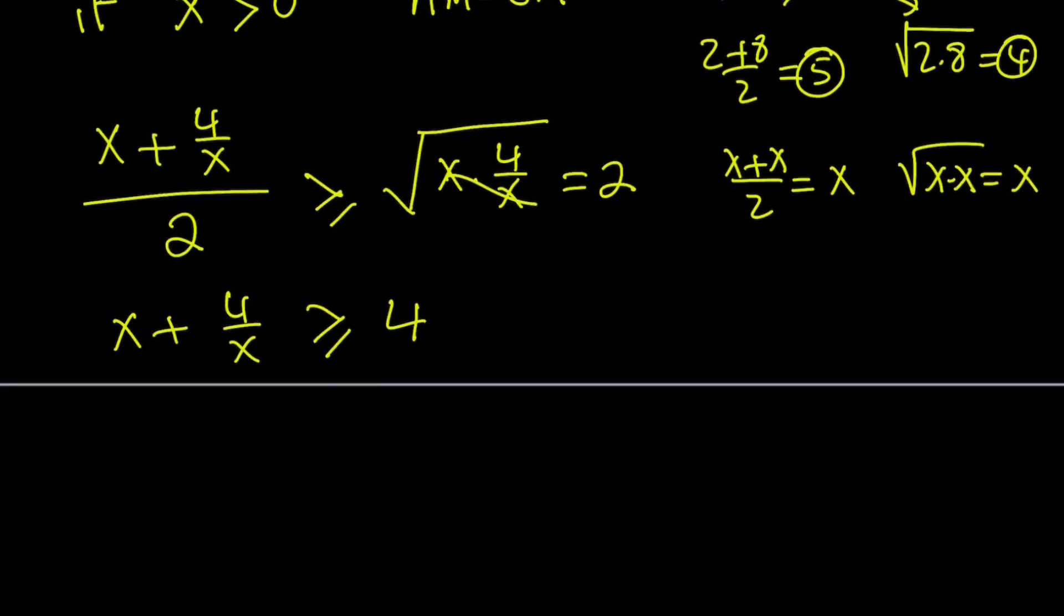And then if you go ahead and cross multiply here, you get x plus 4 over x is greater than or equal to 4. Such a weird sign, but anyways, you get the idea. And some people make it like this, and that's perfectly fine.